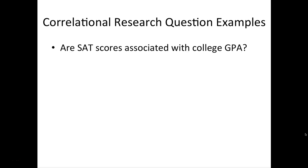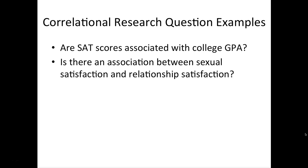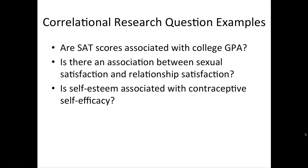We may ask a variety of correlational research questions. One of the big ones you'll see in online demos is whether SAT scores are associated with college GPA — there's typically a pretty strong and clean association between these two variables. In our field we can think about questions related to sexuality, for example: is there an association between sexual satisfaction and relationship satisfaction? In that case we'd probably hypothesize a positive correlation such that as sexual satisfaction increases, relationship satisfaction also increases.